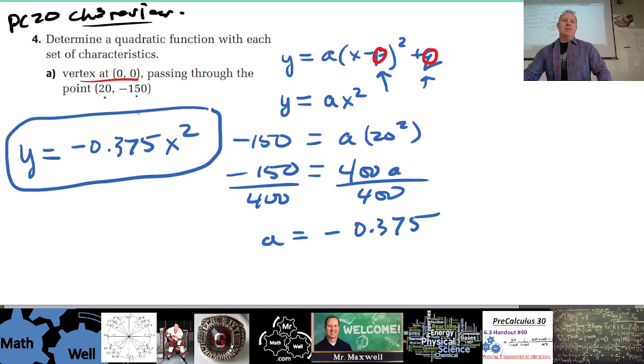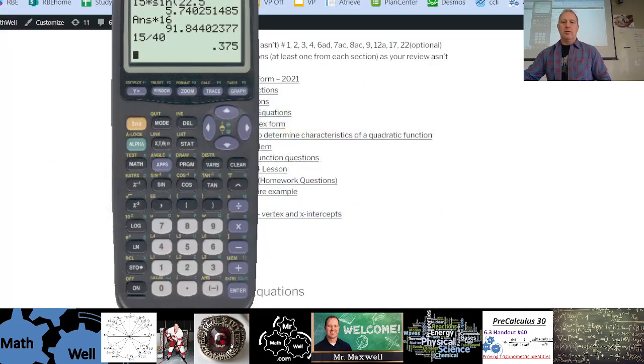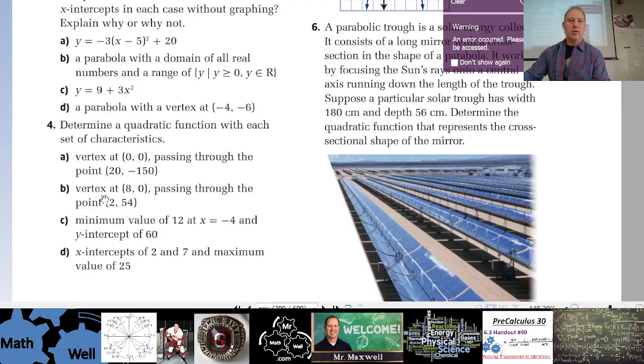And if you had something other than (0, 0), so for instance, one of the other questions here, if you had a vertex at (8, 0), then you would have x minus 8 squared. And then you just leave that x minus 8 in there, put your x in there and then subtract 8 from it, and then solve for a.